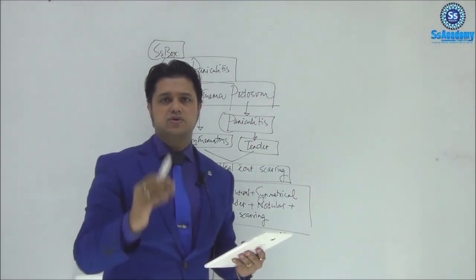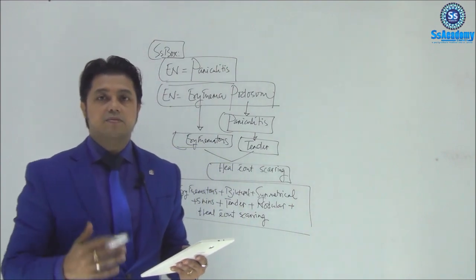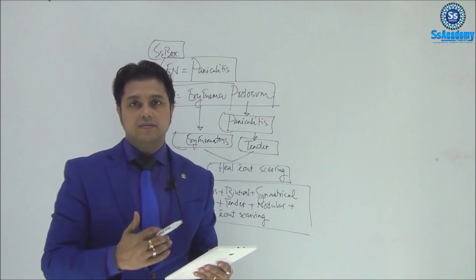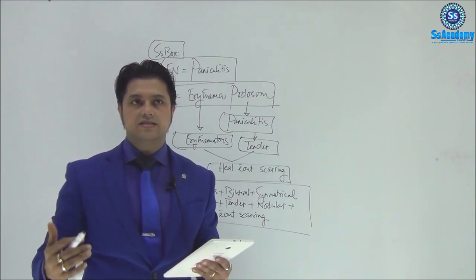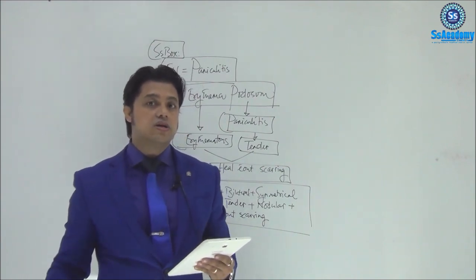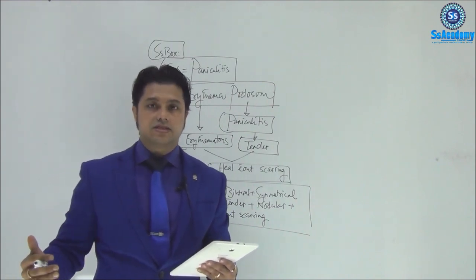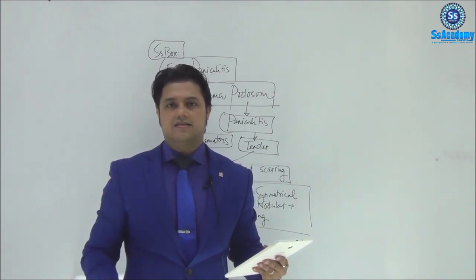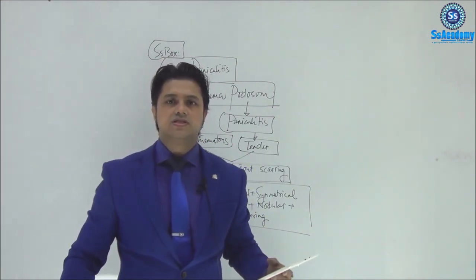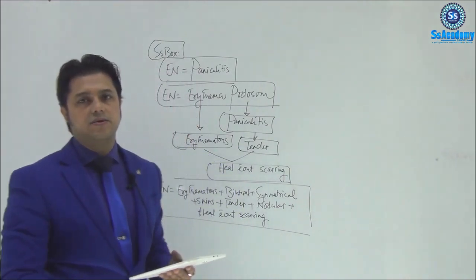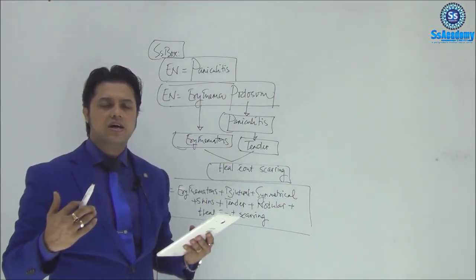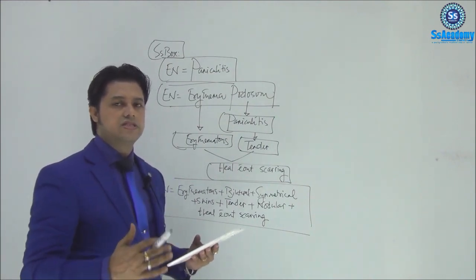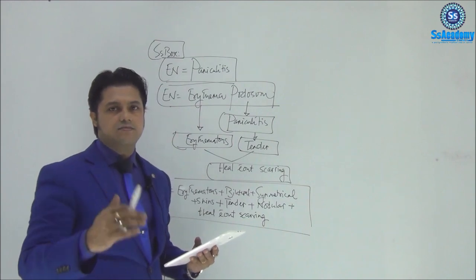Once again: erythema nodosum is a nodosum, nodosum is panniculitis. Panniculitis is an inflammation so there will be tenderness. So: erythematous, tender, nodular shape, and heals without scarring. Symmetrical, bilateral, over both shins of the leg — that is the diagnosis of erythema nodosum. It can also occur in the thighs, arms, and forearms, but the most common site is bilateral shins.